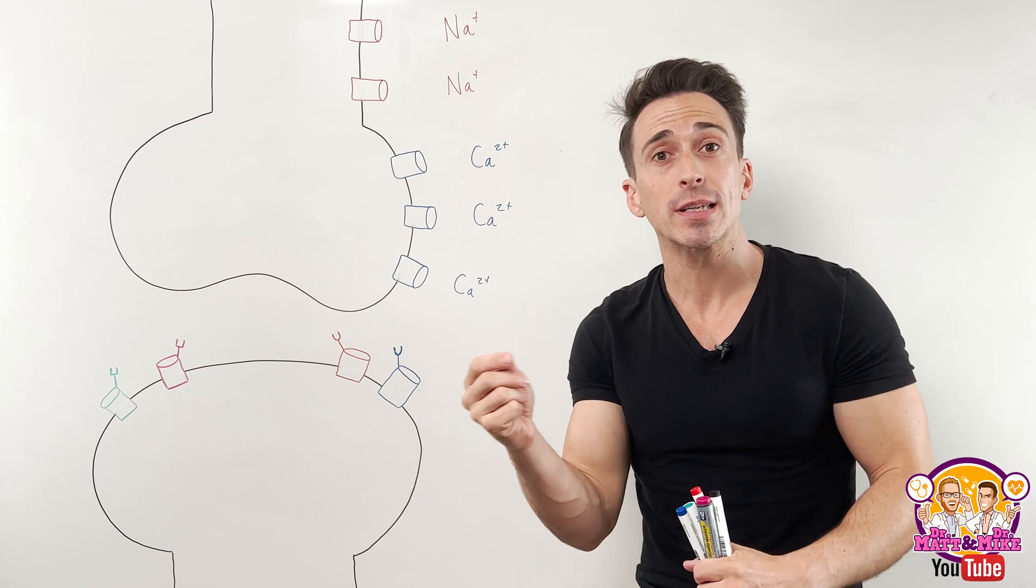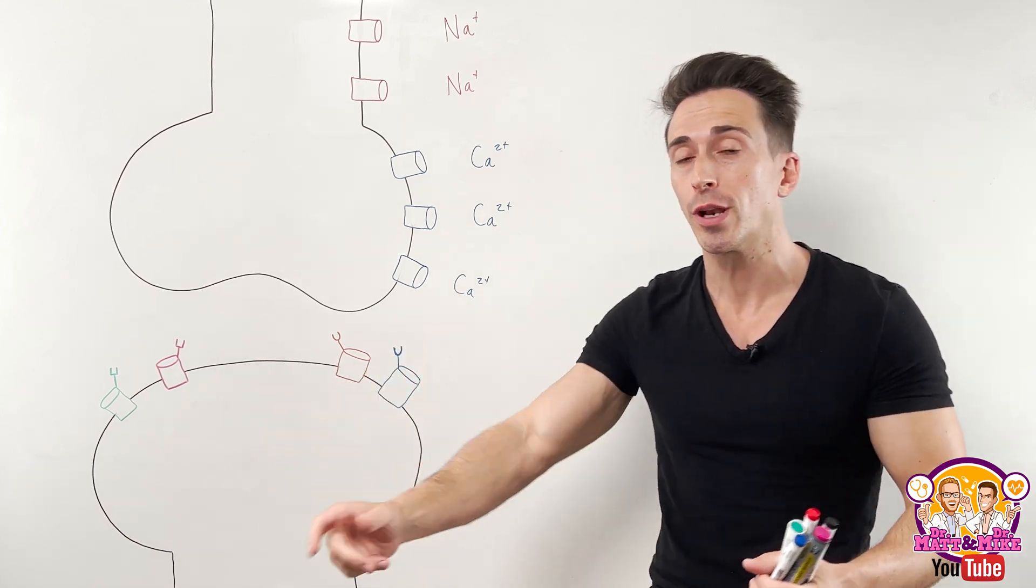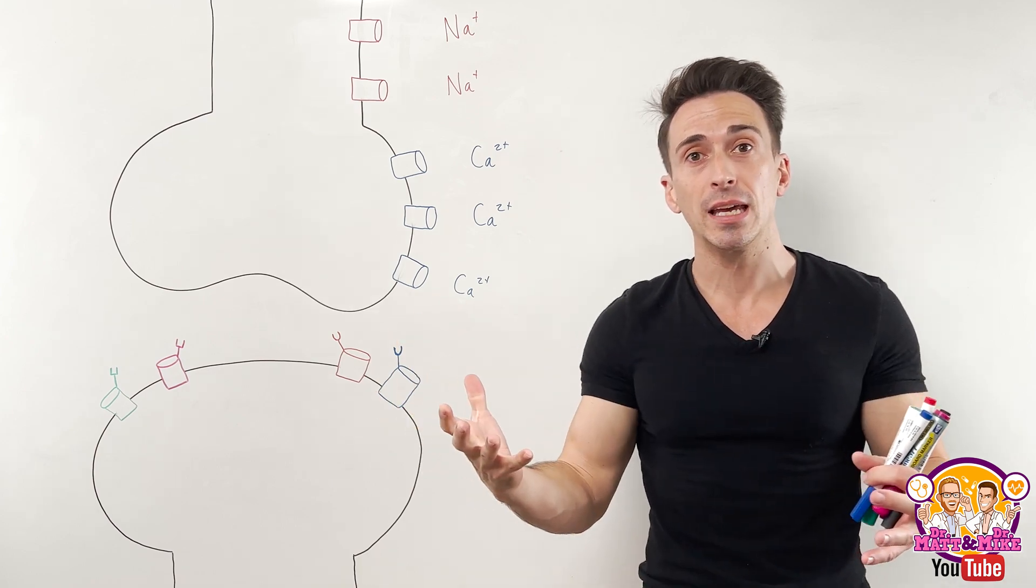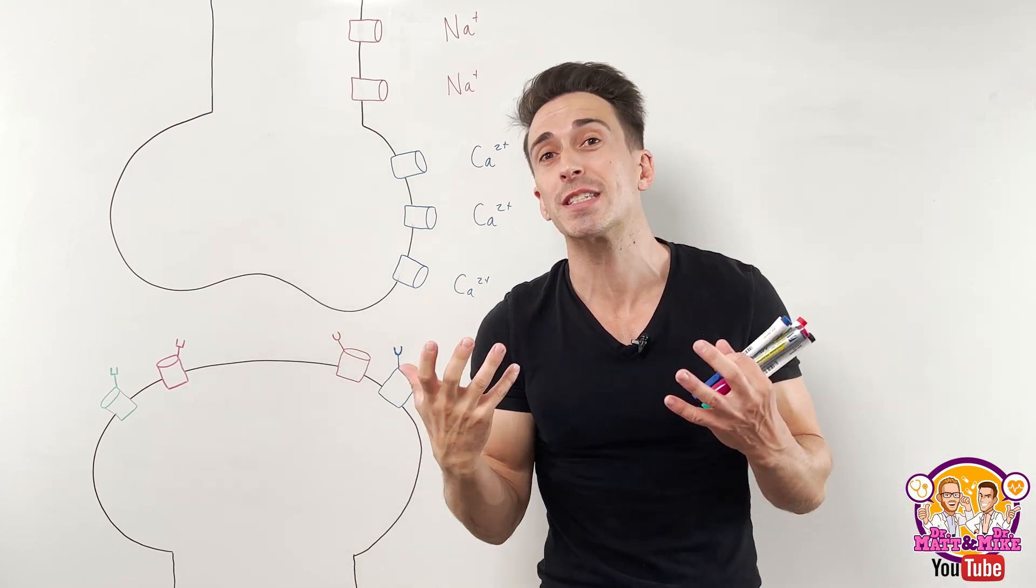Now excitable tissue means that the tissue has the capacity to do something. So if it's a neuron, it sends a signal. If it's a muscle, it contracts. If it's a gland, it's going to secrete some sort of substance.